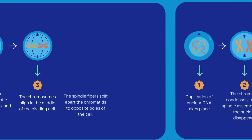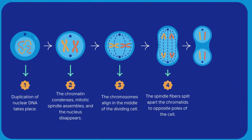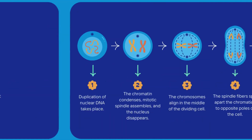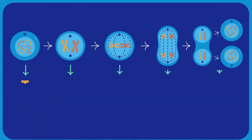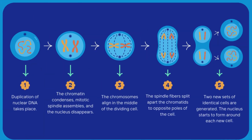In the fifth step, the cell basically divides into two equal parts; in the middle, the cell moves toward each other and is divided into two equal cells. The two new sets of identical cells are generated. The nucleus starts to form around each new cell, and the nucleus forms its own cell wall around each for protection.